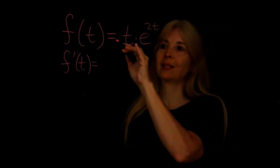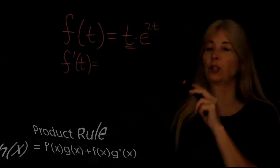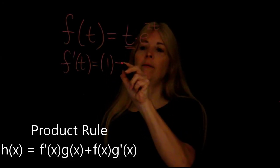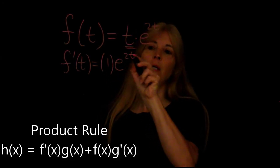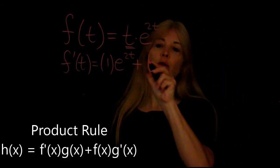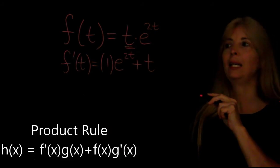So the product rule says take the derivative of the first function, so the first function is t, so the derivative would be 1, leave the second function alone plus leave the first function alone times the derivative of e to the 2t.